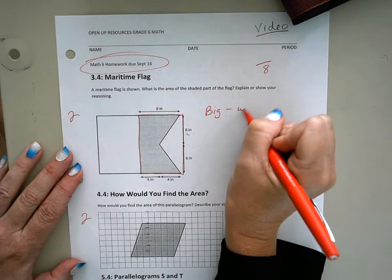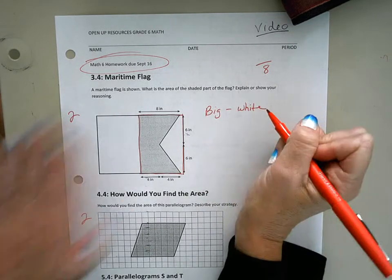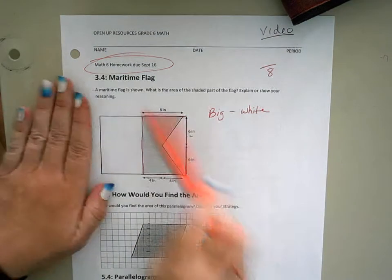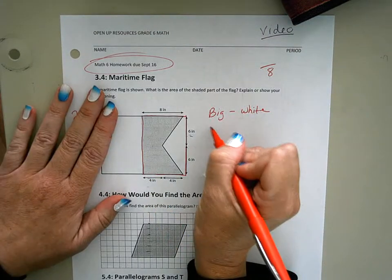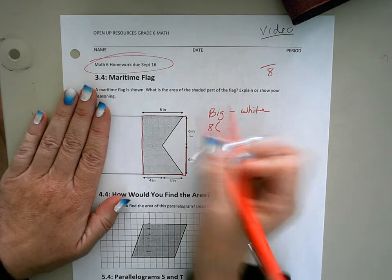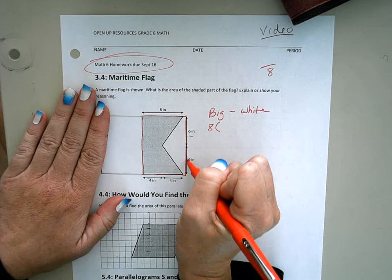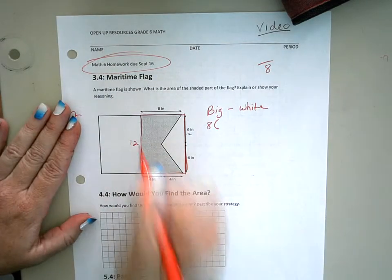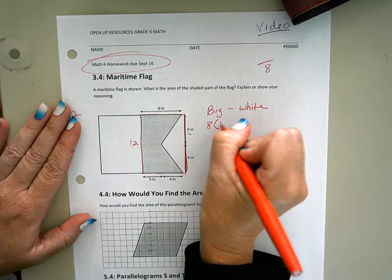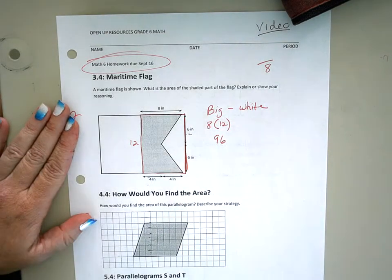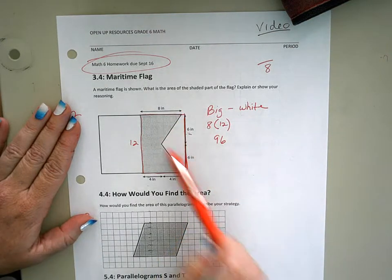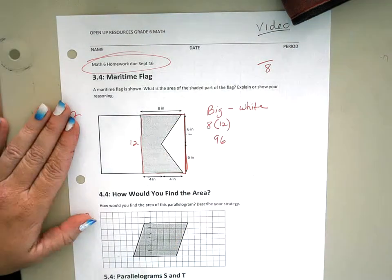For my big area, we're going to have base times height, and we have our base which is 8 and our height which is 6 plus 6, which is 12. So 8 times 12 equals 96. 96, though, is not the answer because we've got to take out this white triangle.